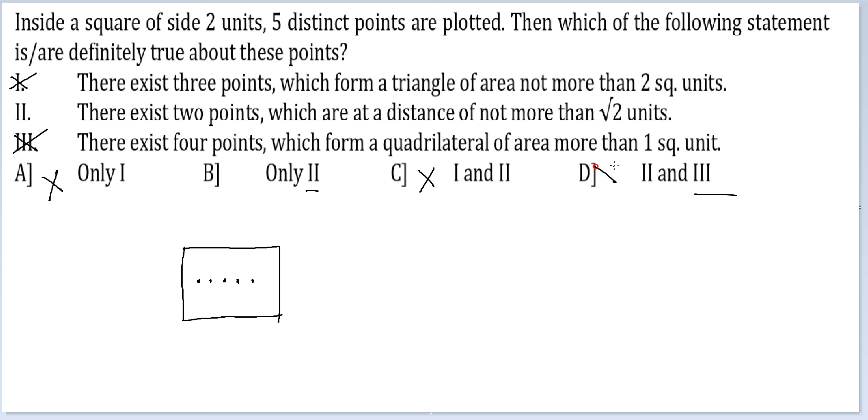And if this is not true, D is not the answer. You can happily mark choice B as your answer. For the sake of proving point B or statement B, let's also look at what it says. I have a square of side 2. There exist 2 points which are at a distance of not more than root 2 units.